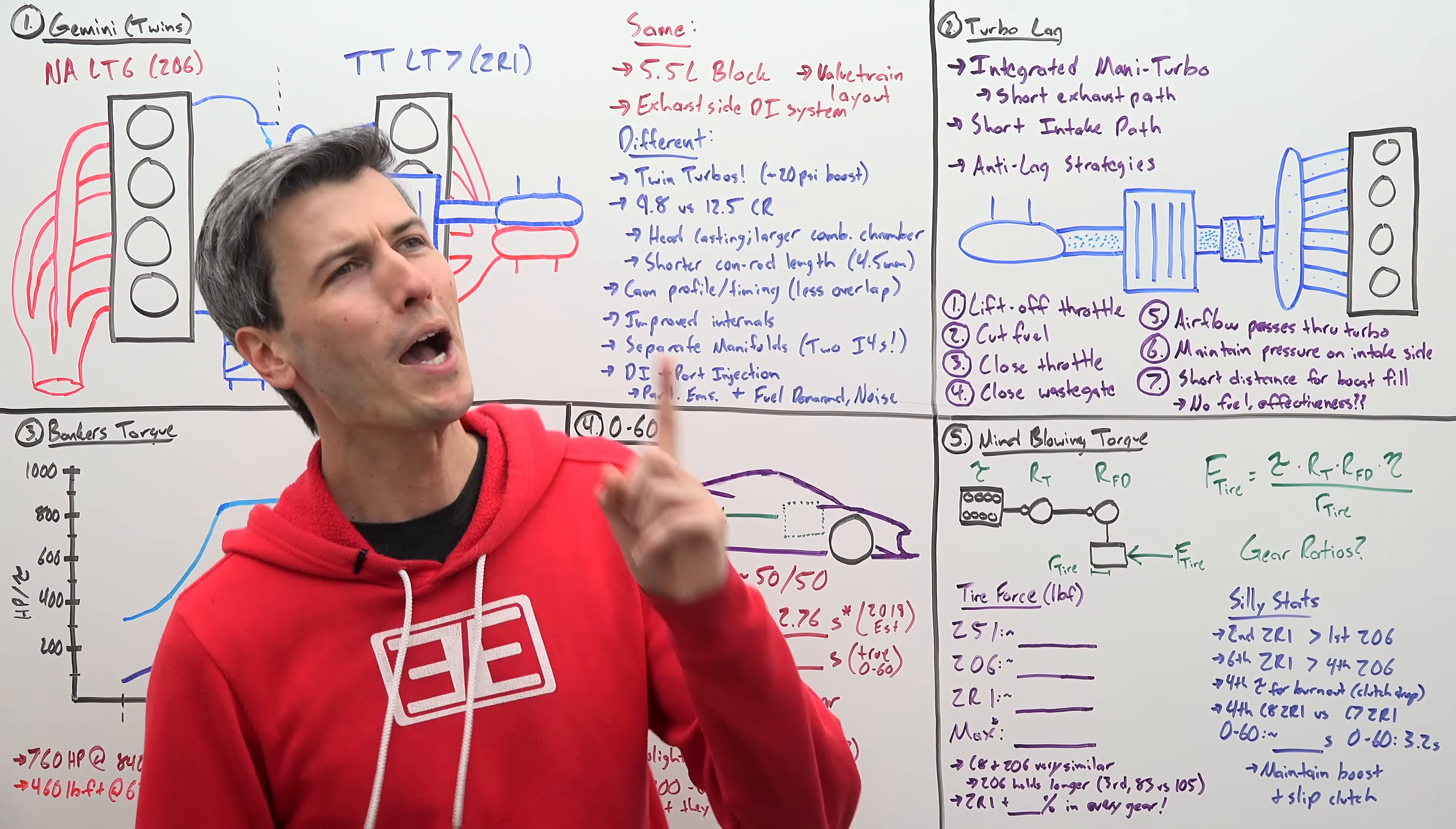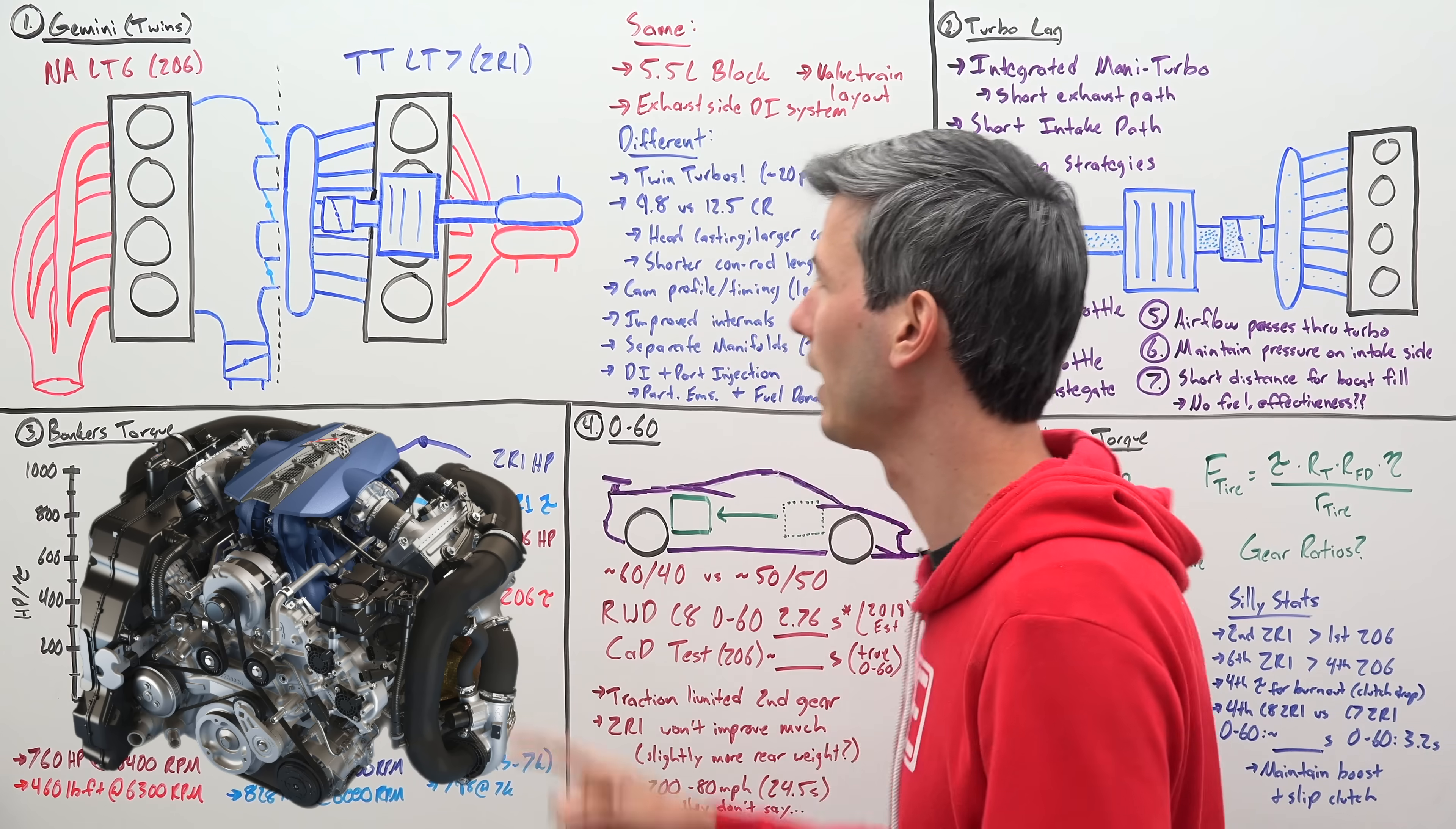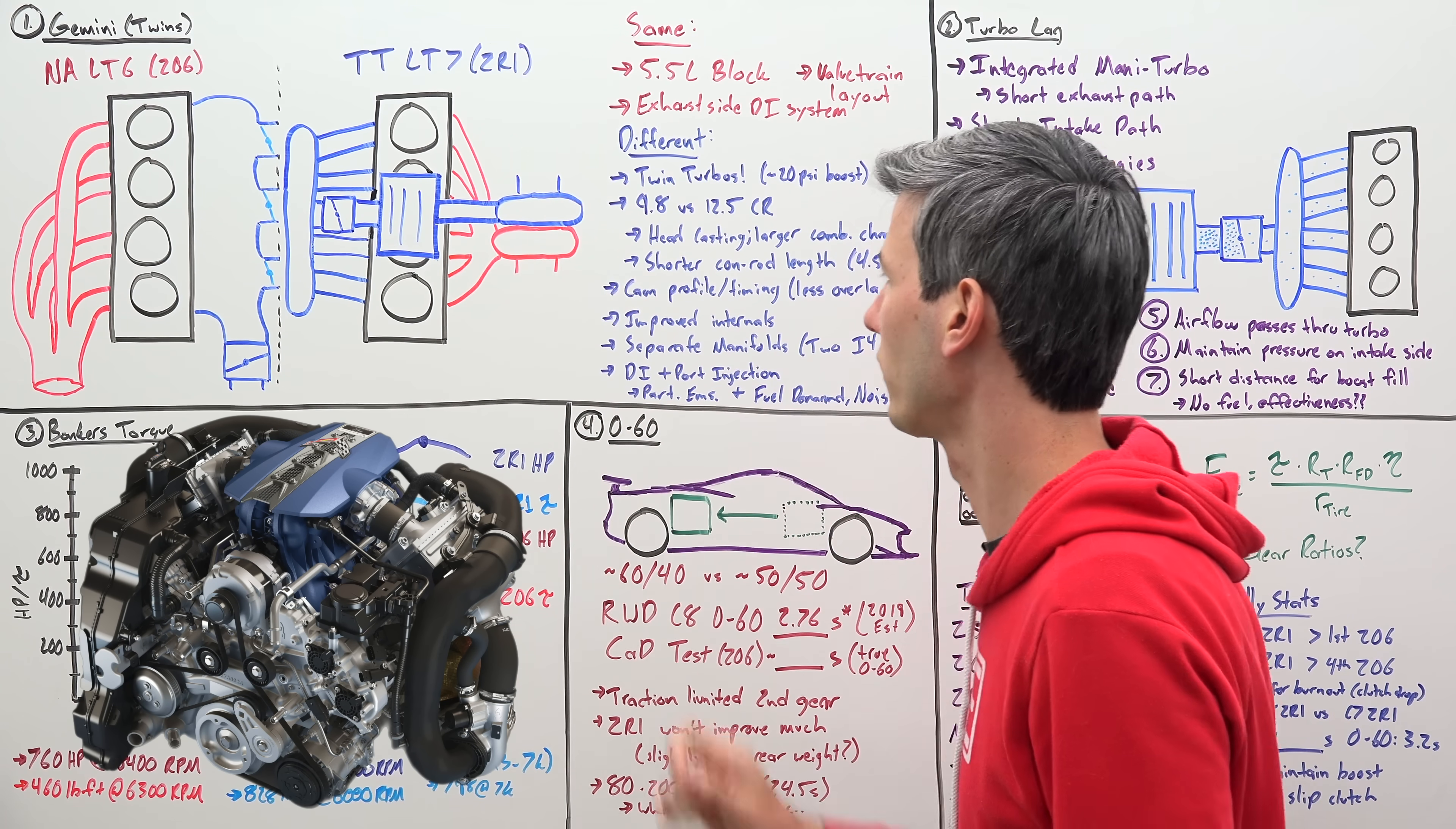Alright, say it with me: why do we hate turbocharged engines? Turbo lag! Cool, okay, so what did Corvette engineers do about said turbo lag? Well, several things. First of all, the turbocharger is integrated into the exhaust manifold, so this means a really short distance from those cylinders to that turbine, which is critical because it means you're not losing much energy getting those exhaust gases to that turbo.